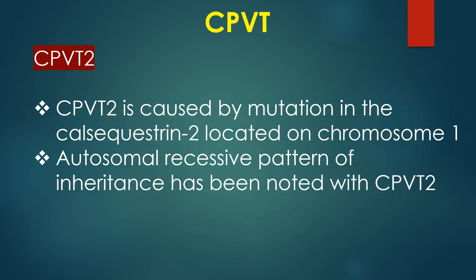CPVT2 is caused by mutation in calsequestrin 2, located on chromosome 1. Autosomal recessive pattern of inheritance has been noted with CPVT2.